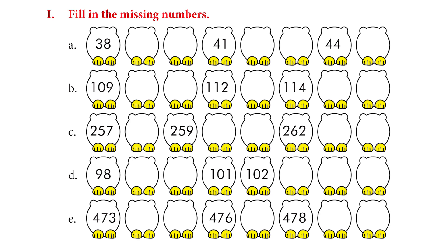The first exercise is to fill in the missing numbers — it's very easy. After 38 comes 39, then 40, then 41. I'm sure you know that by now. Can you try and finish exercises A to E?